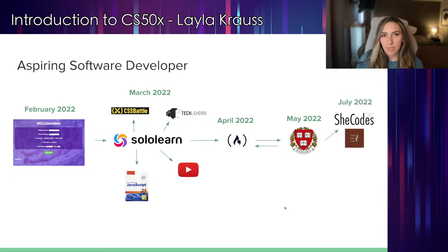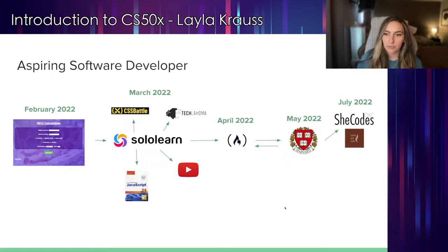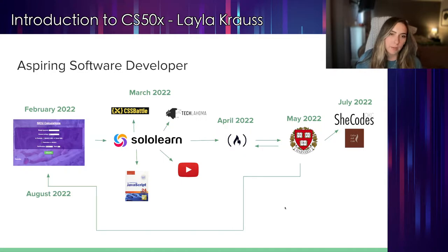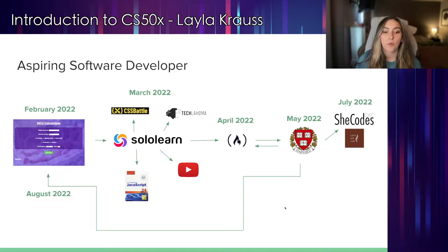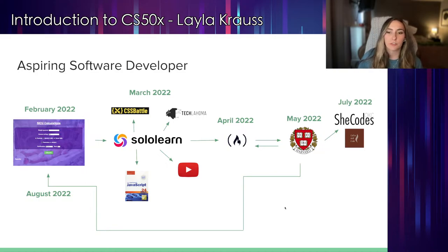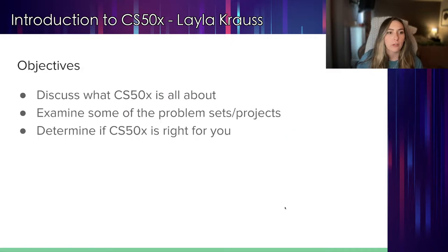Over the summer, I became a co-organizer for two local user groups: She Codes Oklahoma City and OKC Coffee and Code, so catch me at some of those meetups. And for my final project in my CS50X course, I'm building version 2.0 of my calculator, which is super exciting. Of course, shout out to Google and Stack Overflow.